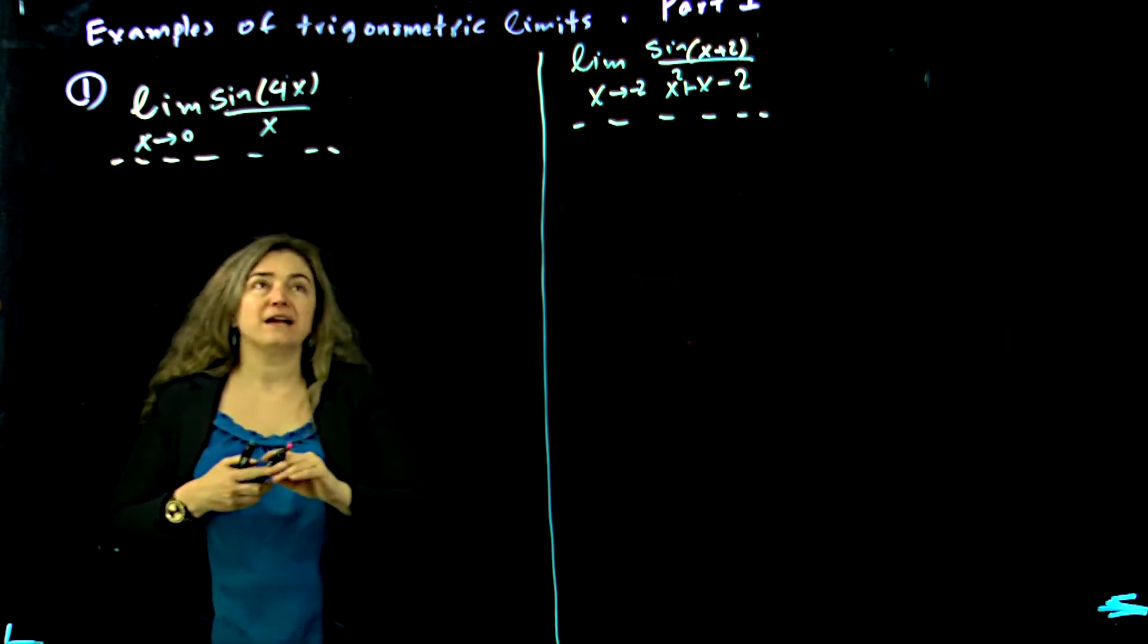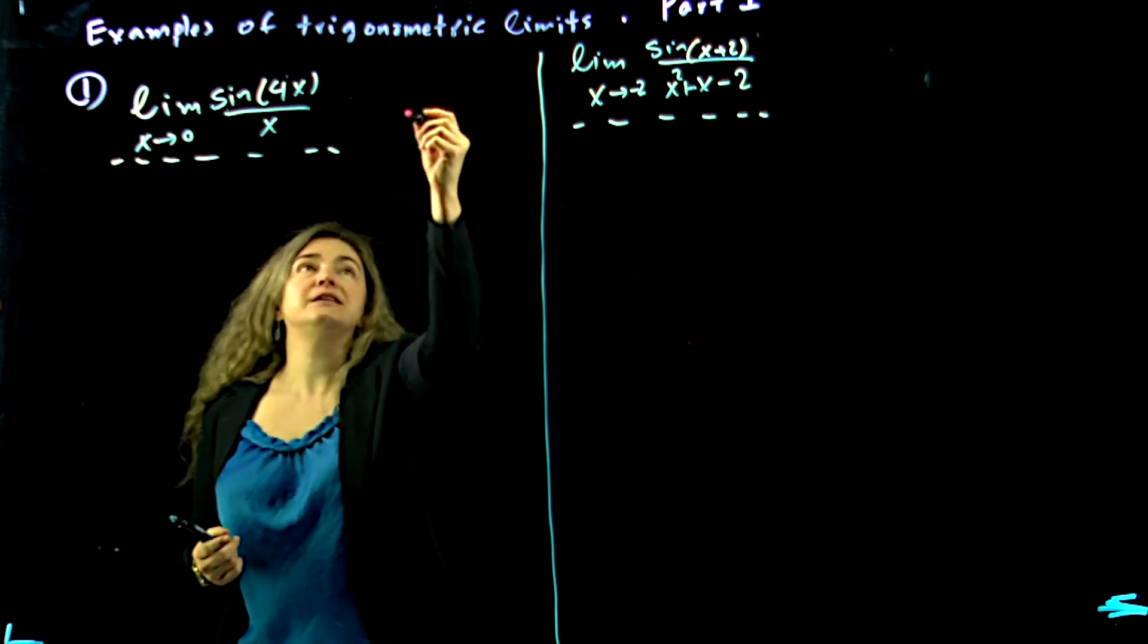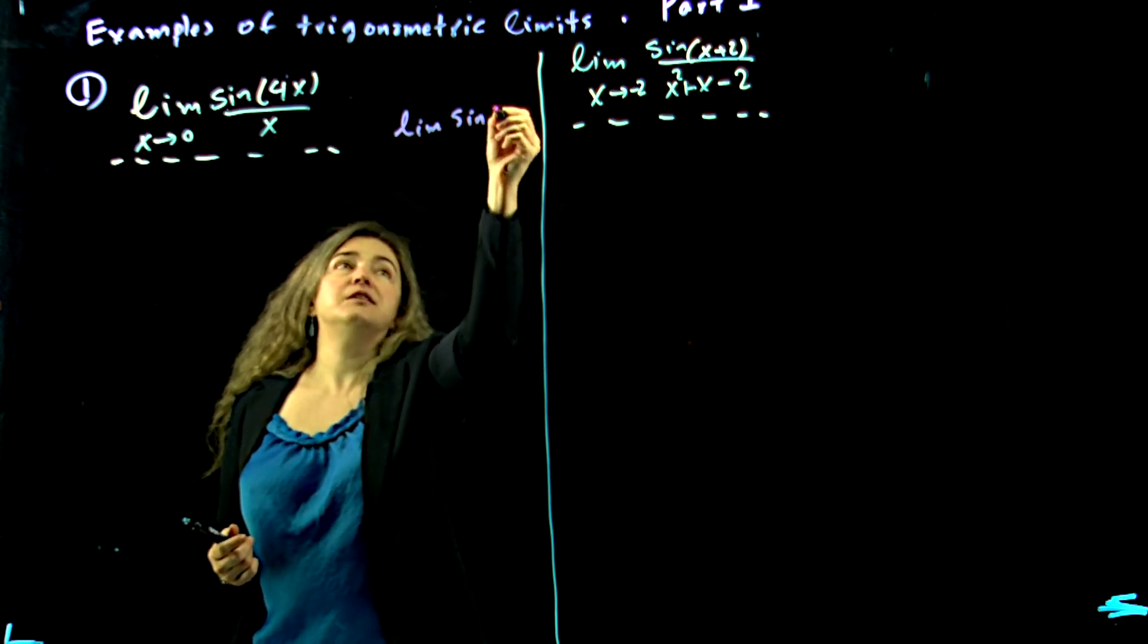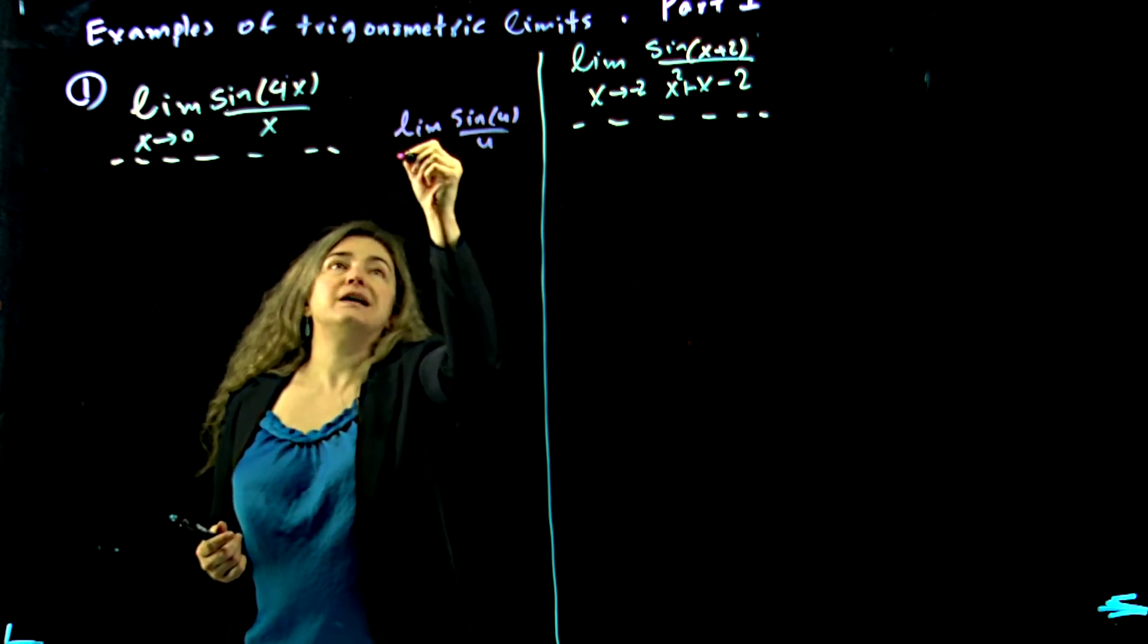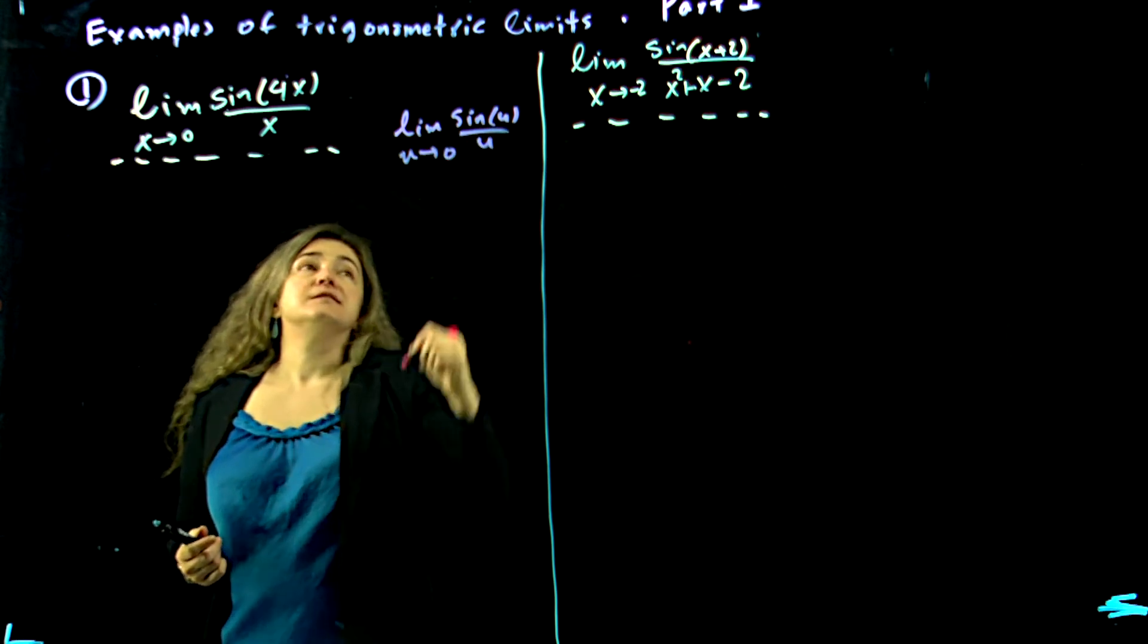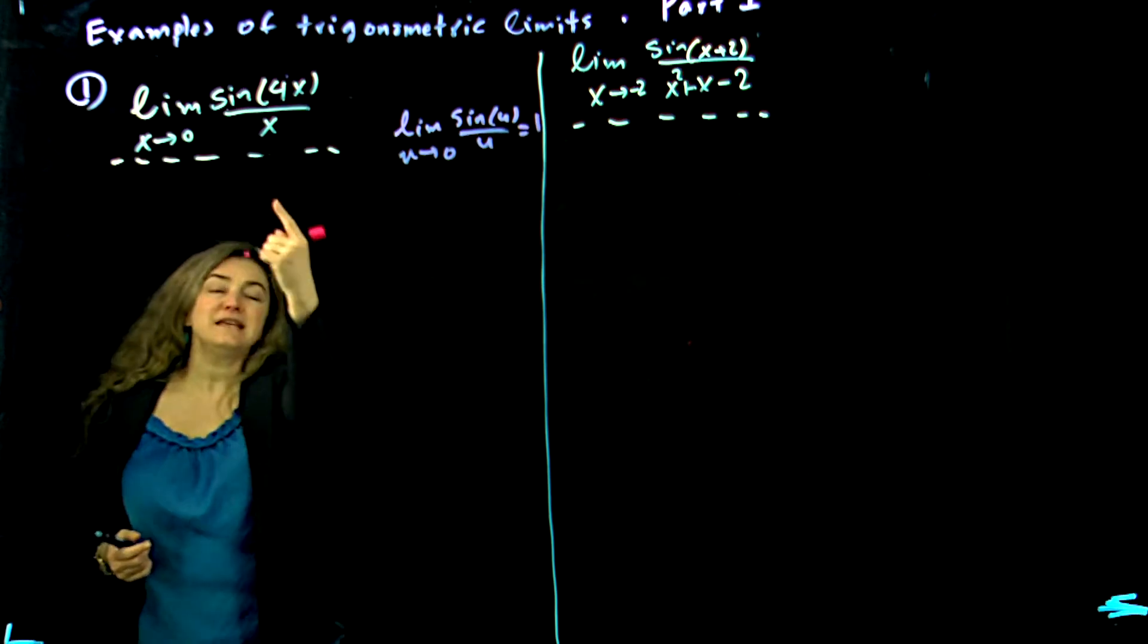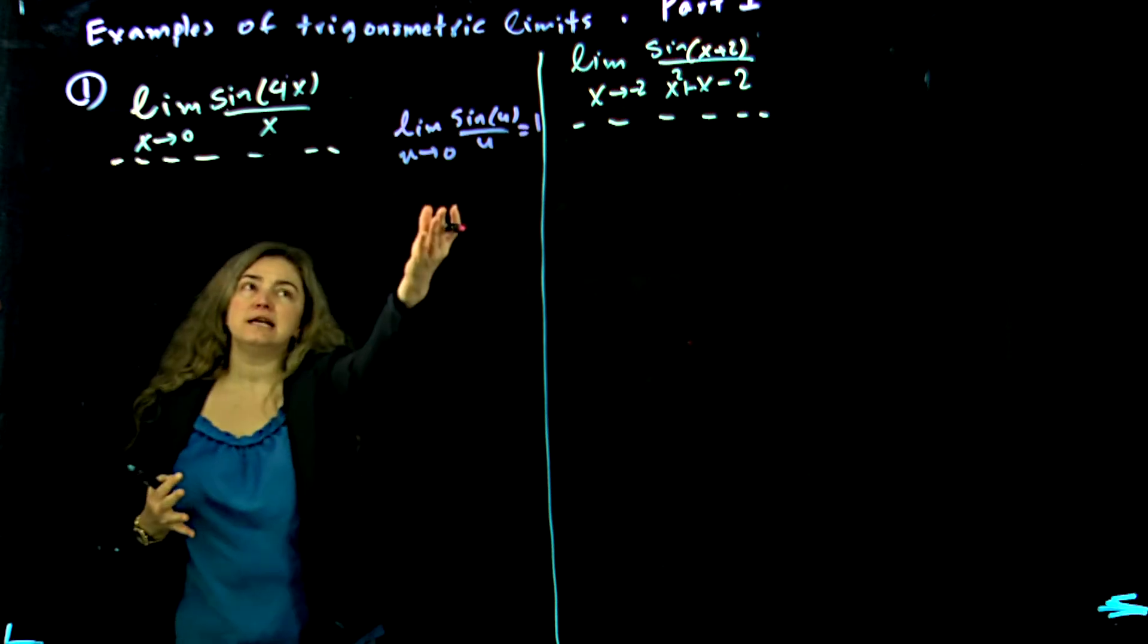If you go back to your material, you know something about this limit: limit of sine of u over u as u approaches 0. This one is supposed to be 1. Oh, this is very similar. How do I relate that to this?